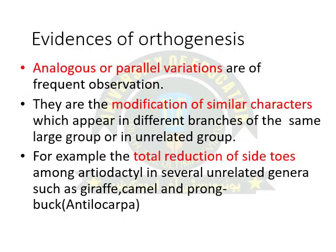Now we will discuss the evidences of orthogenesis. Firstly, we will discuss analogous or parallel variations that are observable. These are modifications of similar characters which appear in different branches of the same large group or in unrelated groups.